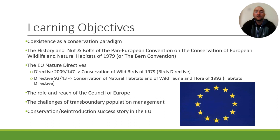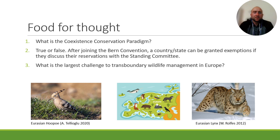The first one is Directive 2009-147, or the Conservation of Wild Birds of 1979. The second one is Directive 92-43, or the Conservation of Natural Habitats and of Wild Fauna and Flora of 1992. Both of those are a mouthful, so we're going to be referring to them as the Birds Directive and the Habitats Directive, respectively. The next topic is the role and reach of the Council of Europe, and the challenges of transboundary wildlife management, mostly focusing on larger game species and large carnivores. Finally, we're going to be talking about a wildlife conservation and reintroduction success story in Europe that has some parallels to one here in the United States.